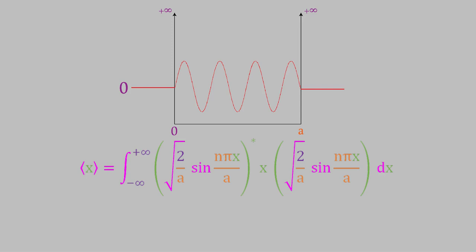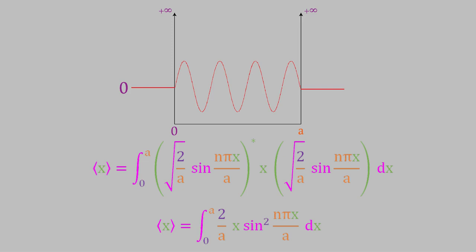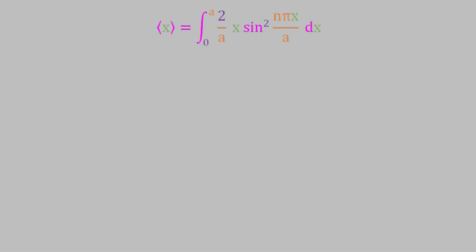Now that you've had a few minutes to think about it, let's solve the equation. First of all, we know that the wave function is 0 when x is 0 or less, and also when x is greater than a. So we only need to evaluate the integral between 0 and a. Notice that the wave function has no imaginary numbers in it, so the complex conjugate is the same as the regular wave function. That means the expression in the integral can be written 2 over a times x times the square of the sine of n pi x over a dx. A is a constant, so we can take 2 over a out of the integral.